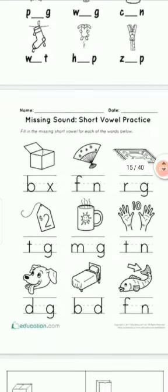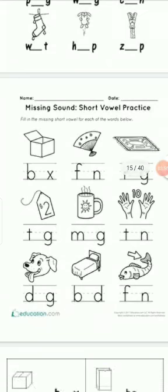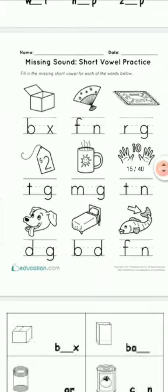Missing sound — short vowel practice. Students, pictures are already given. We have to look at the pictures and complete their missing vowel letters. First picture is box — B, O, X — box. O is missing, so you have to write O. Complete all of these in the same way.